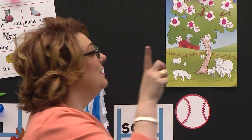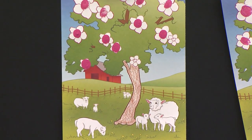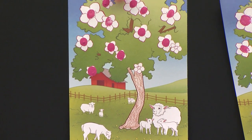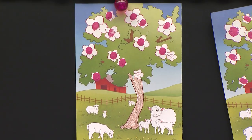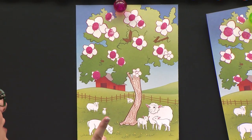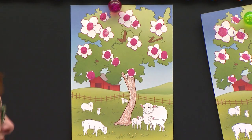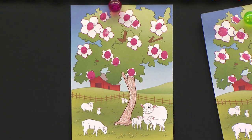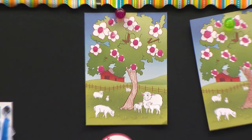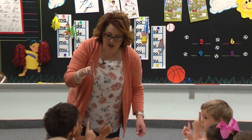Peter Pointer in the paint. Peter Pointer up. Watch me — one, two. One, two. Your turn — one, two. Nice job. Here we go. Peter Pointer up. Touch your paint. Peter Pointer up — one, two. Go ahead and touch. Watch your fingers — you're going to get it right there. Let me see your fingers. I love it.